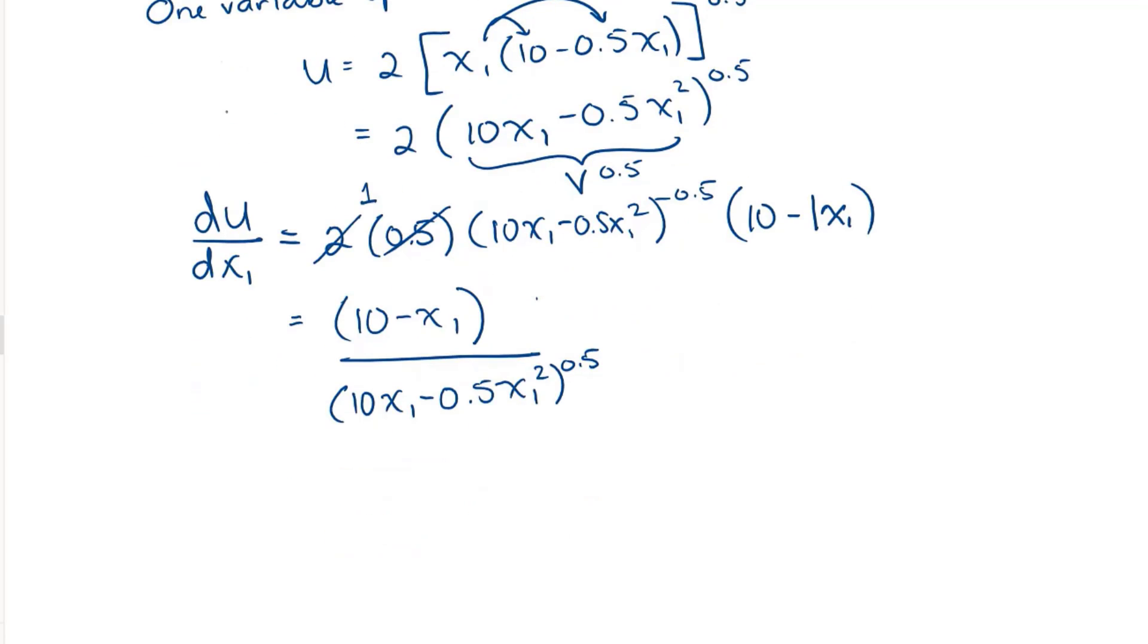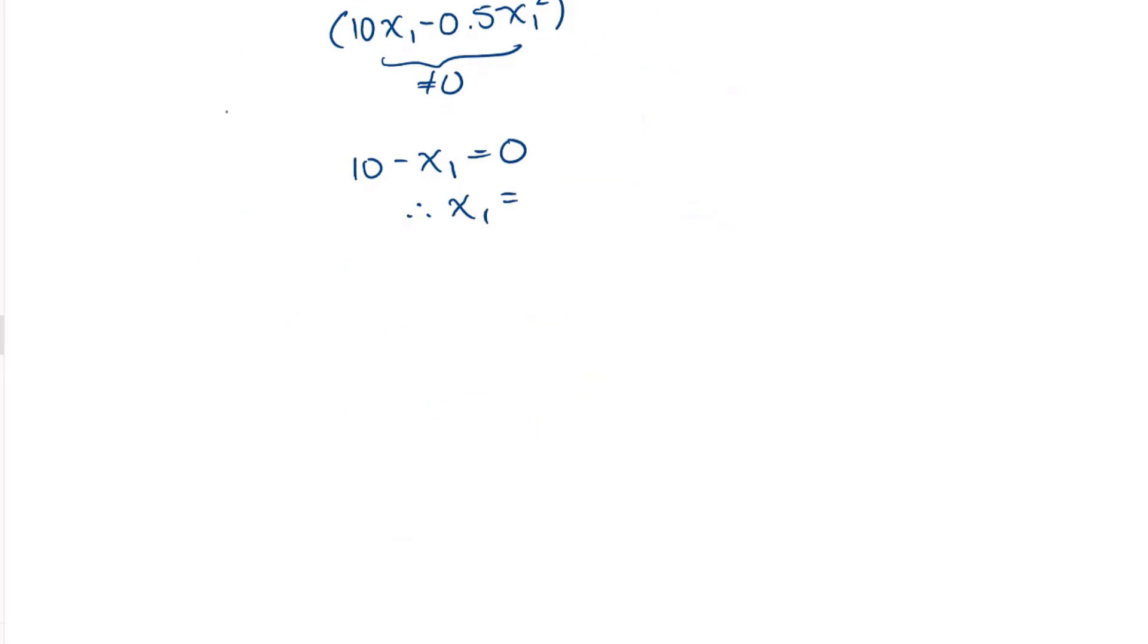Now I'm going to set that derivative to be equal to 0. My denominator cannot be equal to 0. We can't divide by 0. It's a non-existent number, it goes to infinity. So my numerator has to be equal to 0. So 10 minus X1 is equal to 0. Therefore, X1 is equal to 10. There is my first solution.